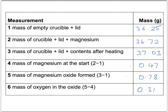We now know the mass of the magnesium, 0.47 grams, and the mass of the oxygen, which is 0.31 grams. And from those two, you should be able to work out what the empirical formula of magnesium oxide is, at least from our experiment.